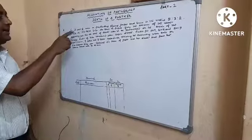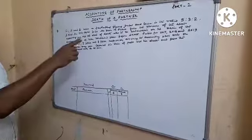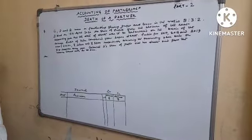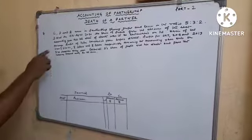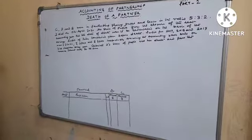C, D, and E were in partnership sharing profit and losses in the ratio of 5:3:2. D died on 15th April 2020.